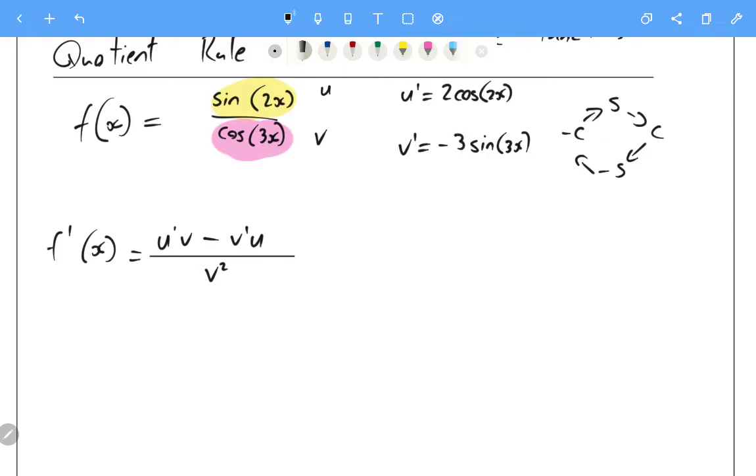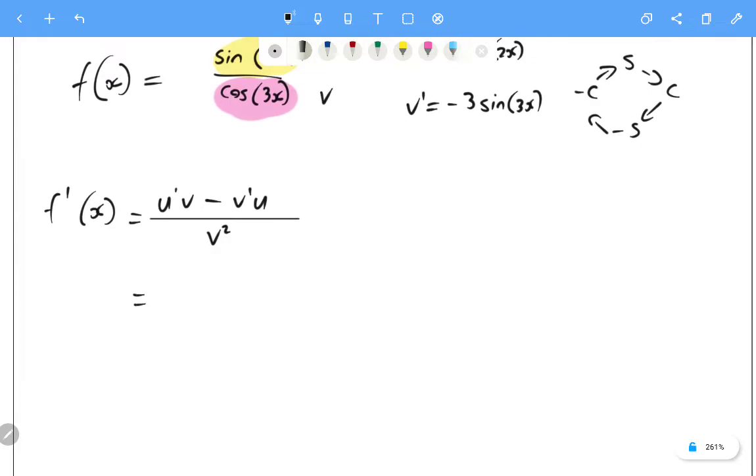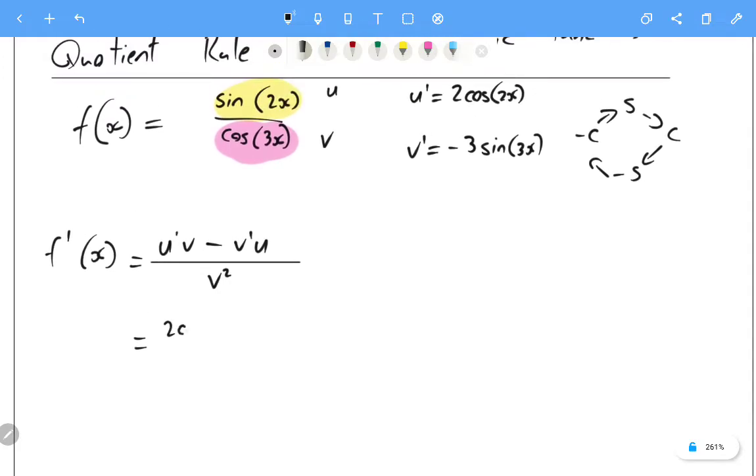So from here it's just a substitution game right, so this will be equal to u dash which is 2 cos of 2x times v which is cos of 3x minus, and then in this case it's going to be minus 3 of sine of 3x, that's v dash, times sine of 2x.